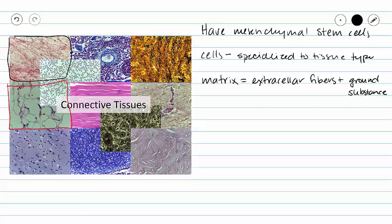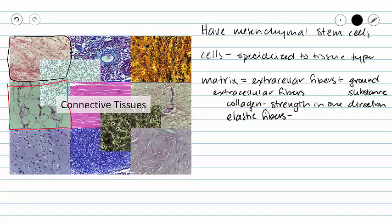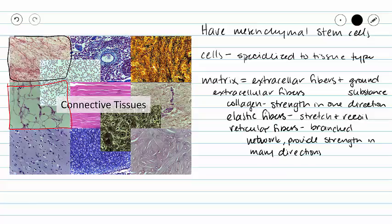Our extracellular fibers come in three major types. Collagen provides strength in one direction and generally stains pink. Elastic fibers provide stretch and recoil and generally stain purple. Reticular fibers are a branched network that provides support in many directions and often stain dark brown or purple.